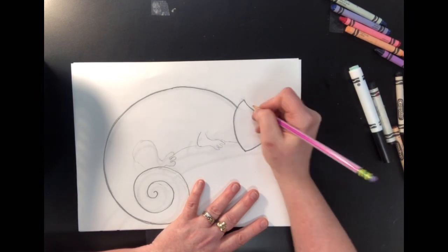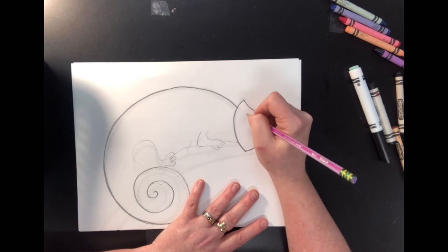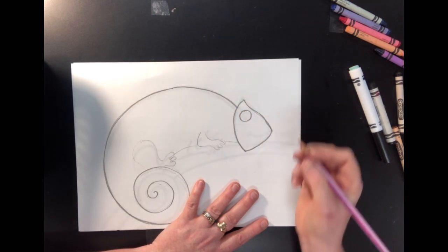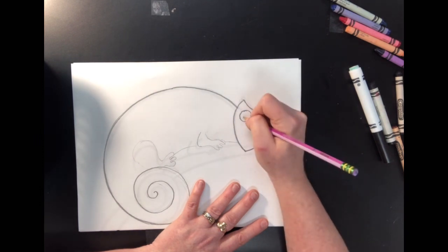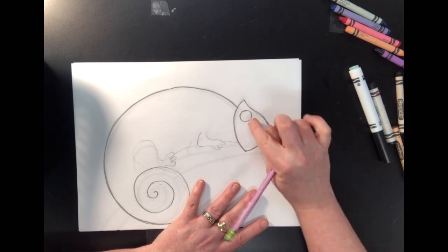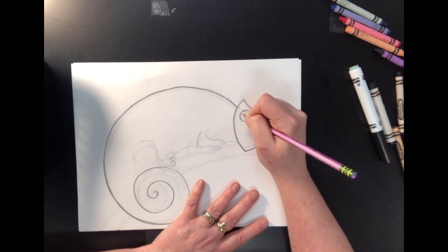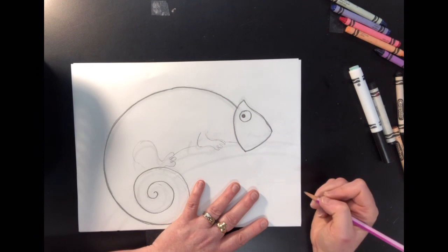And then you know chameleons have really big eyes that roll around in their head. So we're going to put a nice big eye there for him, and you can make the pupil facing any direction because chameleon's eyes will look out in many different directions. I want the chameleon looking towards me, so I'm going to put the pupil in his eye like that.